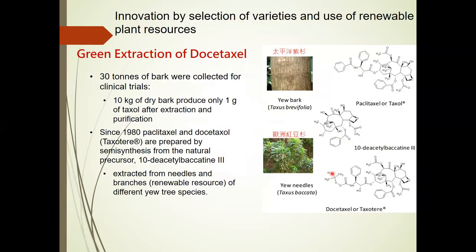Many medicines are extracted from plants. Taxol is one example: 10 kilograms of dry yew bark produces only one gram of Taxol after extraction and purification. The chemical structure of Taxol is very complex and expensive to extract — it's also expensive for full synthesis. Through innovation by selection of variety and use of renewable plant resources, Taxol can be prepared by semi-synthesis from the natural precursor 10-deacetylbaccatin III. This compound can be extracted from the yew needle and branch instead of the yew bark.